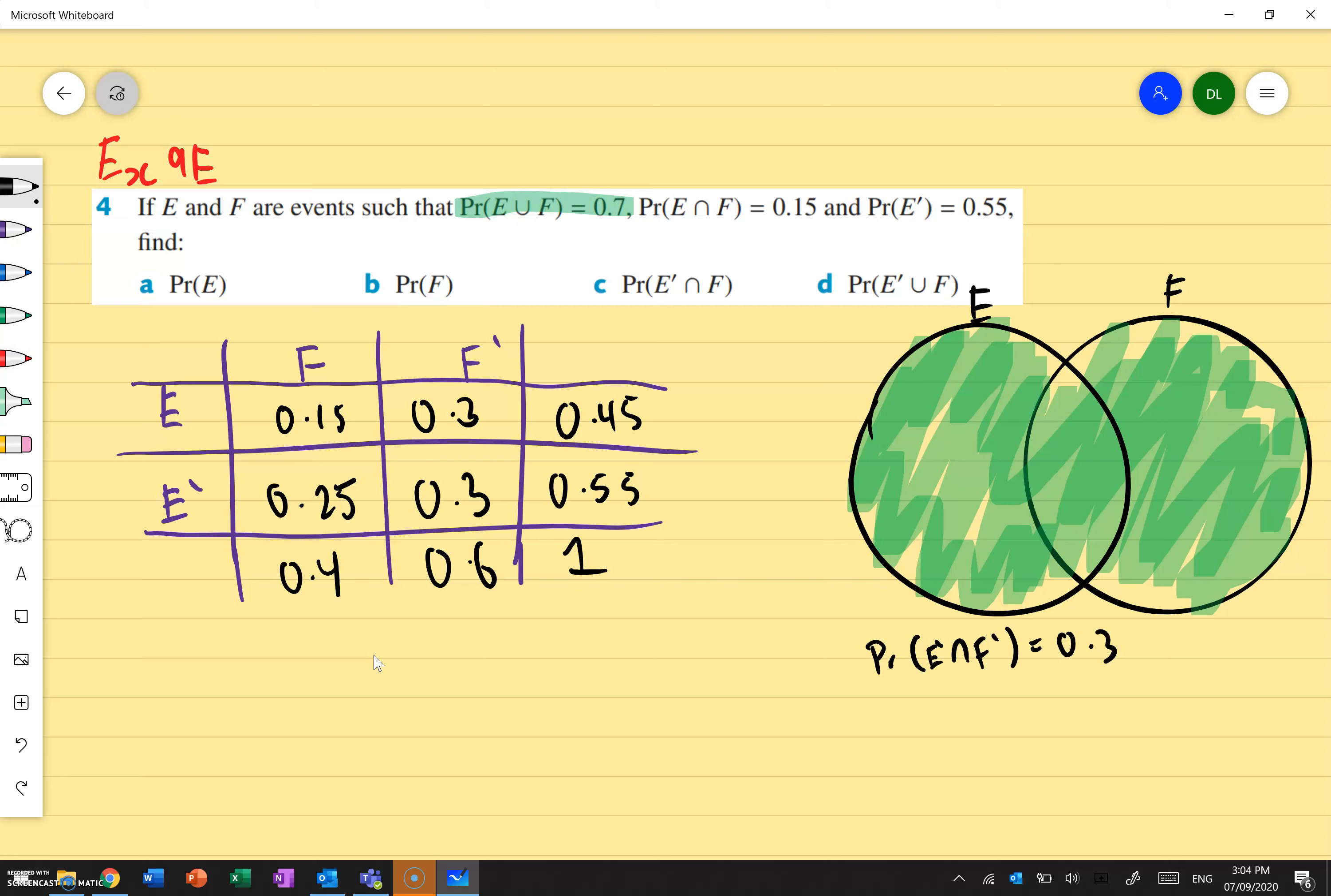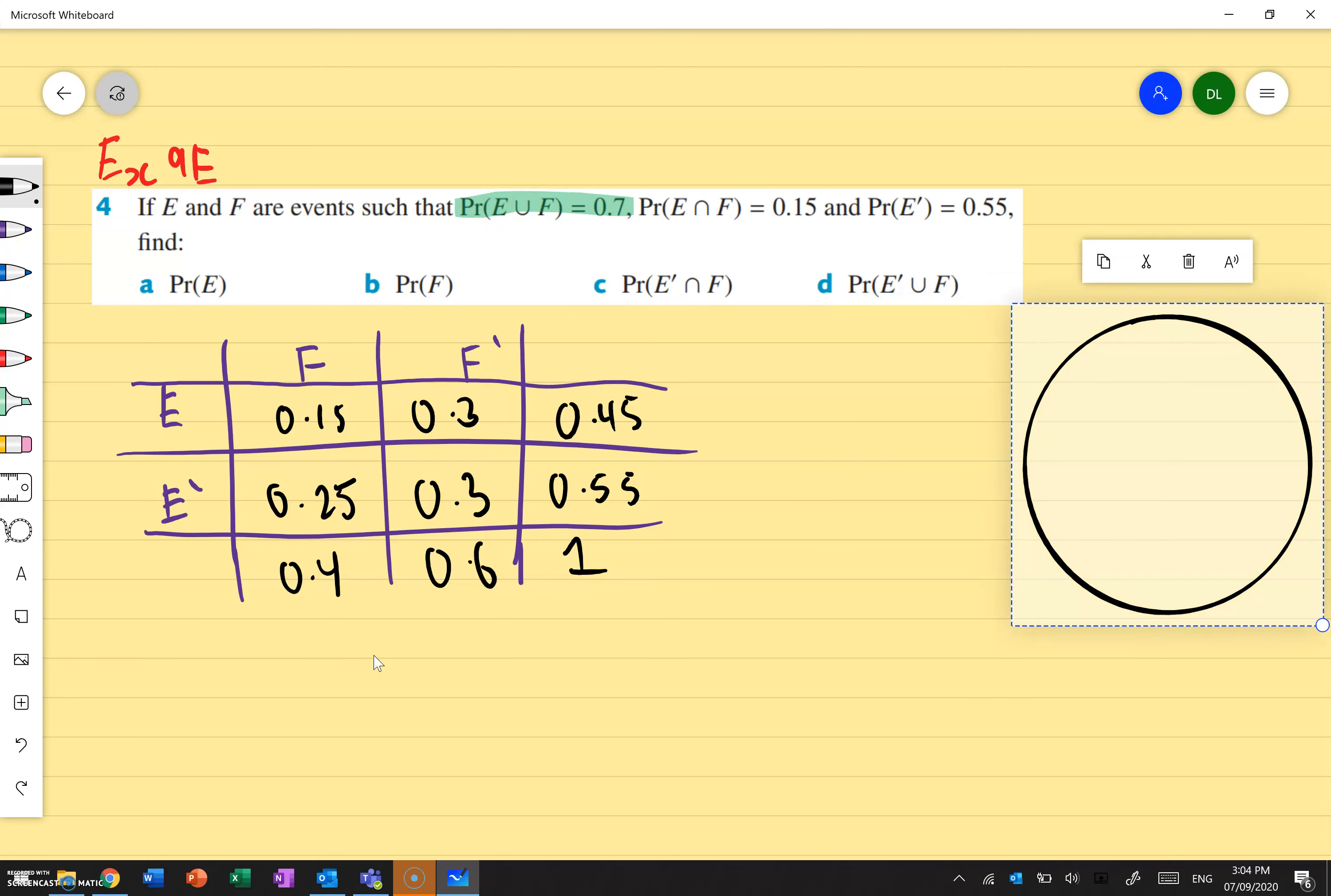So now we can answer our question that our Venn diagram is completed. I'm going to rub this out so that we can work on it later. So the probability of E, well, the probability of E is just what's the total of the E row. So the E row is this one over here. So the probability of E would be 0.45. So 0.45, that's it.